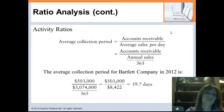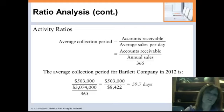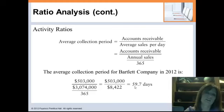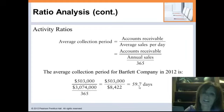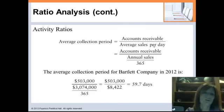Another activity ratio is average collection period — how long does it take to collect on our bills? We take accounts receivable divided by average sales per day, where average sales per day is sales divided by 365. For Bartlett, the answer is 59.7 days — almost two months to collect. Whether that's good or bad depends on the industry: if you're retail that's pretty bad, but if you're medical it's pretty good because insurance claims take a long time. Obviously, the lower this number, the better — collect money faster and you can do more with it.